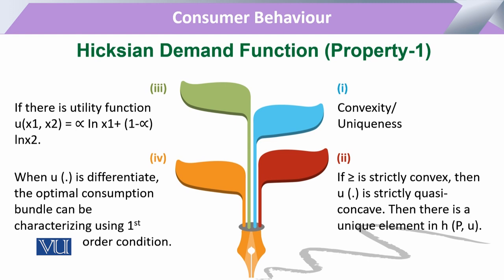If the utility function is expressed for two commodities x1 and x2, then: U = α·ln(x1) + (1 − α)·ln(x2). The scalar values attached to the utility function must sum to 1 — that is, α plus (1 − α) equals 1. When this continuity is differentiated with respect to the variable proportions of the commodities, either x1 or x2, the optimal consumption bundle is characterized through the first-order condition.